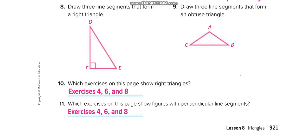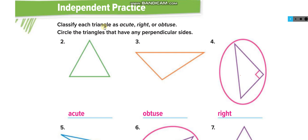Now classify each triangle as acute, right, or obtuse, and circle any triangles that have perpendicular sides — perpendicular sides mean a 90-degree angle. The first triangle has one angle more than 90, so it is obtuse. The next one is a right triangle, so we circle it because its two sides are perpendicular to each other, forming a square corner and a 90-degree angle.